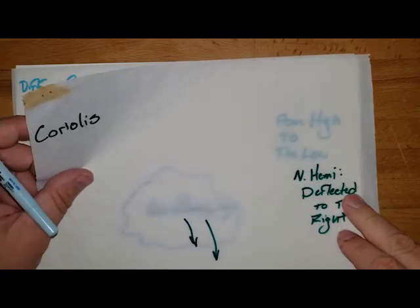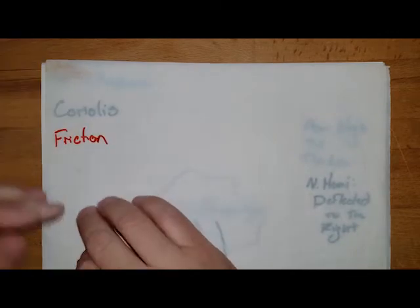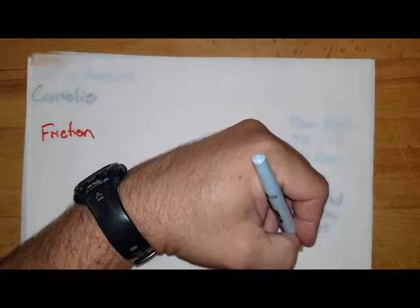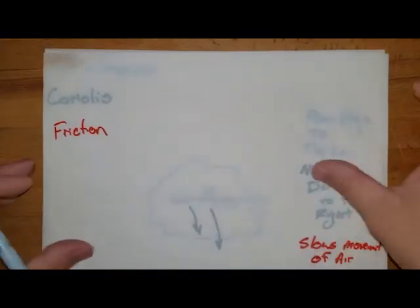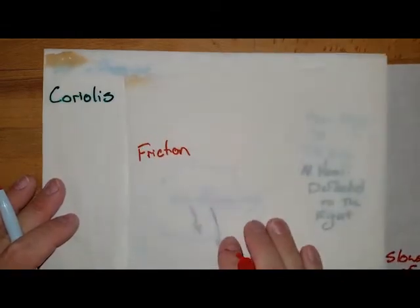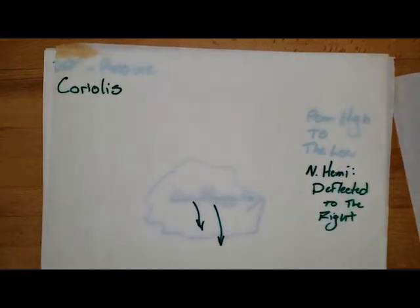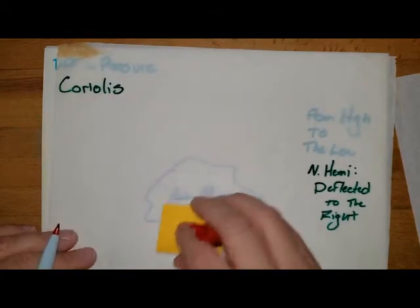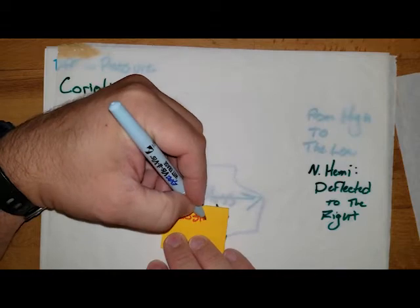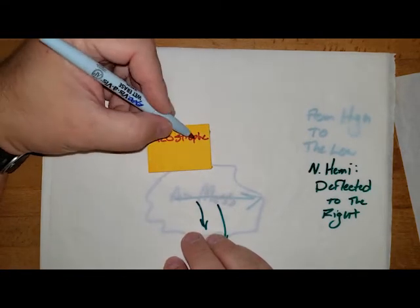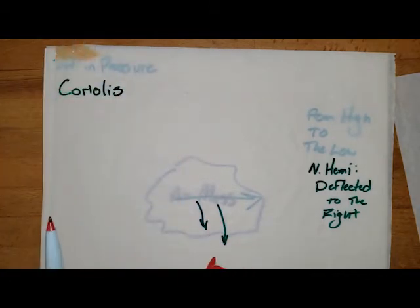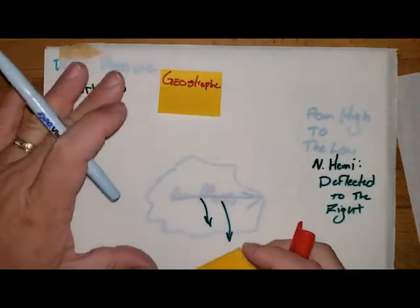The other factor that gets involved is friction. Friction is just what it sounds like — it's the air being slowed down along the surface; it just slows the movement of the air across the surface. Higher winds above the surface don't need to worry about friction, and we have a special name for those — we call them geostrophic winds. Geostrophic winds — G-E-O-S-T-R-O-P-H-I-C — are governed by just the pressure gradient and Coriolis force.